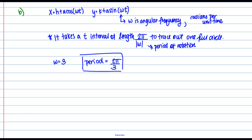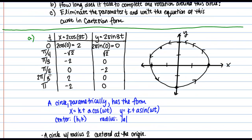And this actually makes sense based on what we saw when we were creating our table of values up here. And we saw that at T equals 2π over 3, that was the first time we came back to our starting point, the point 2, 0.